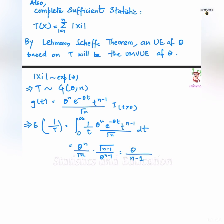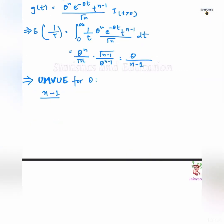Expectation of 1 by T is equal to theta upon n minus 1, hence n minus 1 upon T is an unbiased estimator for theta. Hence n minus 1 upon summation mod Xi is UMVUE for theta.